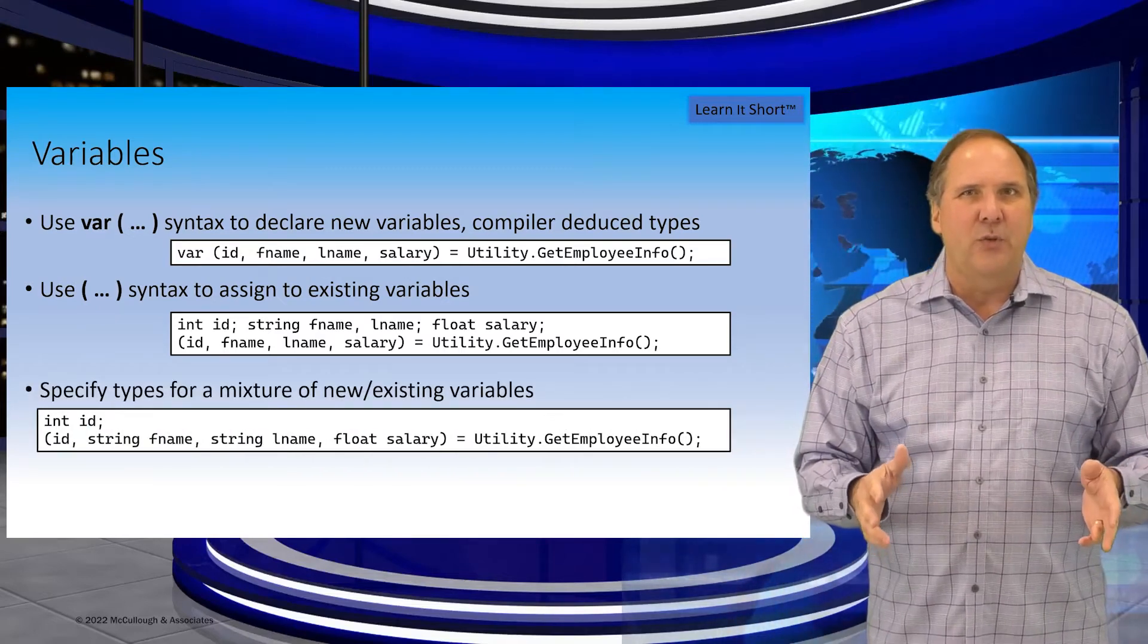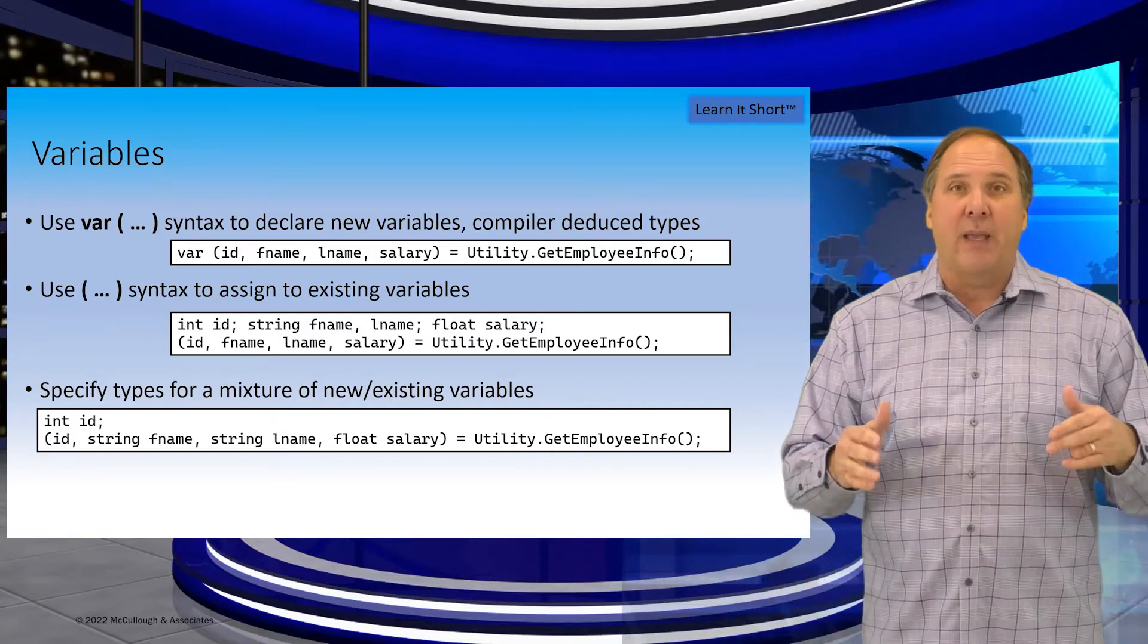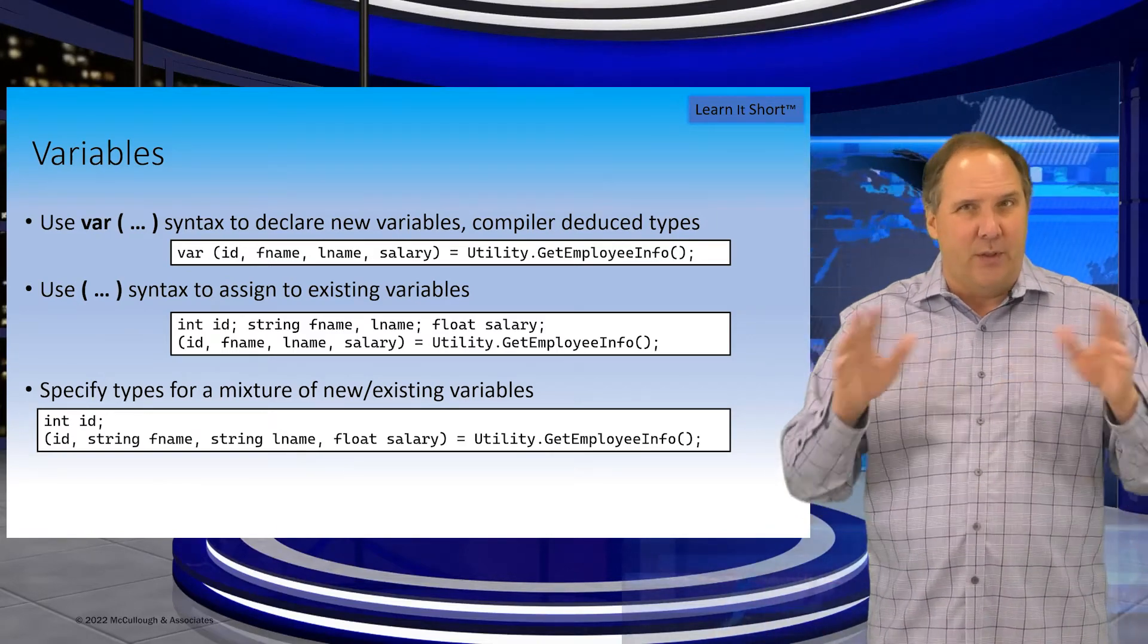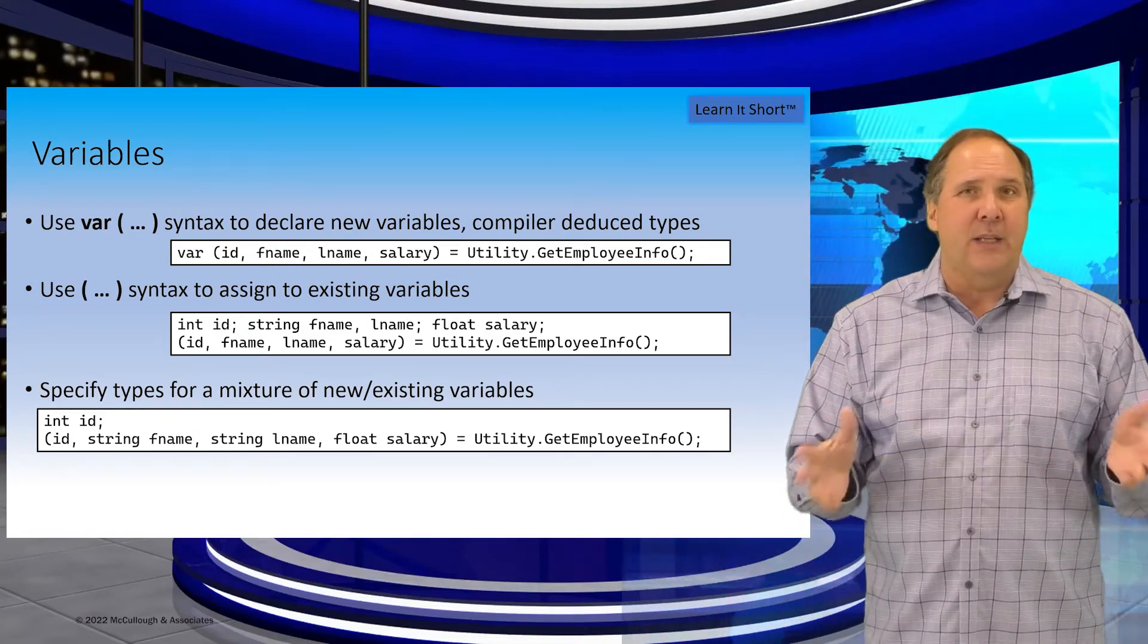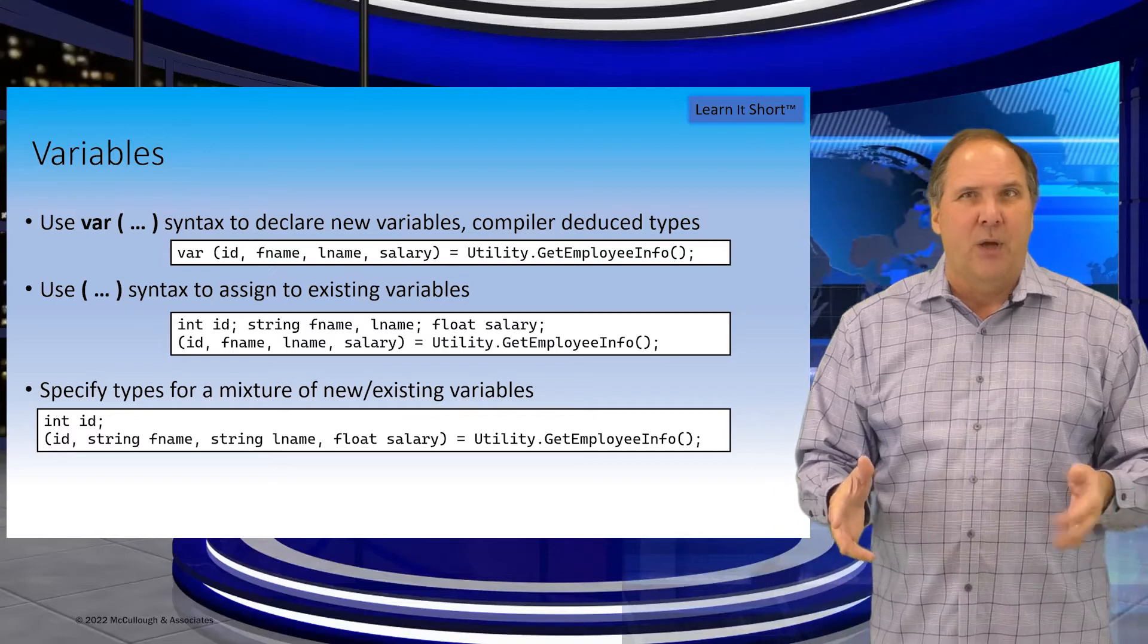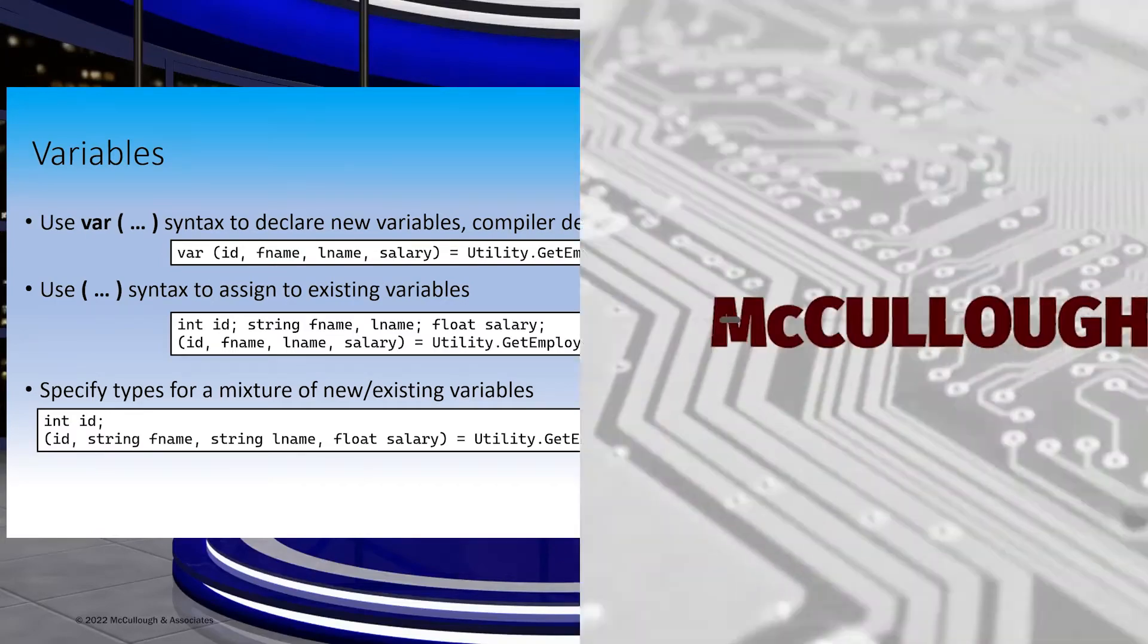Finally, we can use a mix of existing variables and new variables by explicitly declaring them with their types inside the parentheses, as shown in this last example. ID was declared earlier in code, while the other three variables are being declared here in place.